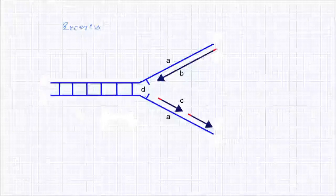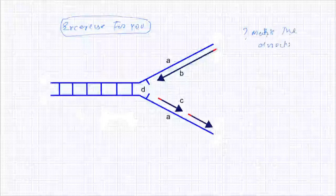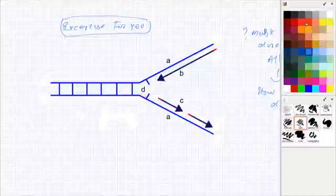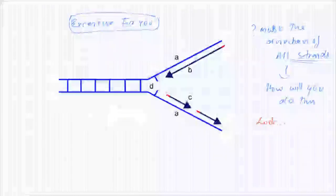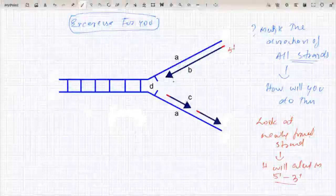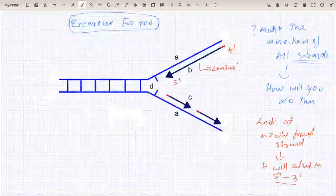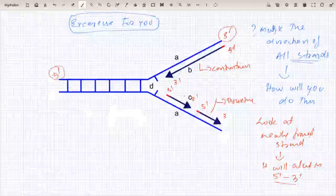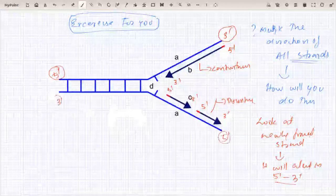I will be giving you one exercise. You have to find out the direction of all four strands in a given replication fork. It is very simple. You have to look at the direction of the newly formed strand — it will always be 5' to 3'. So marking here: this is 5' and that is 3' — that strand is the continuous strand. And this other strand is 5', 3', 5', 3' — that is the discontinuous strand. If one end is 5', the other end will be 3', and vice versa.